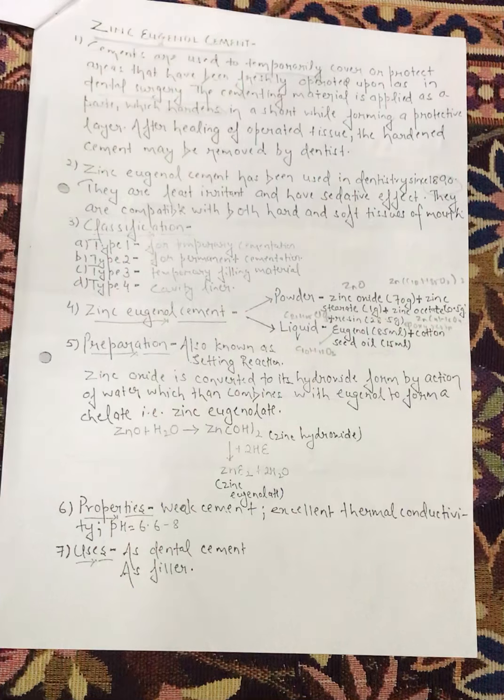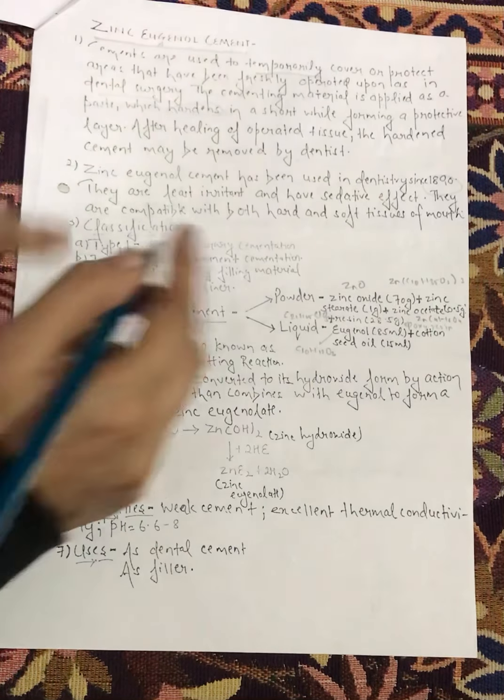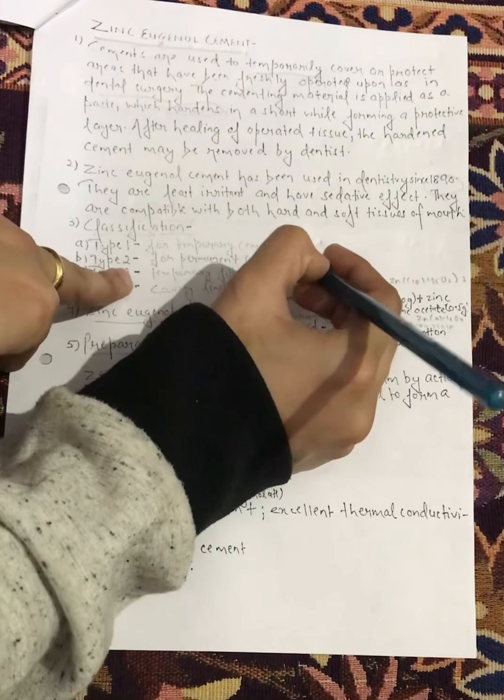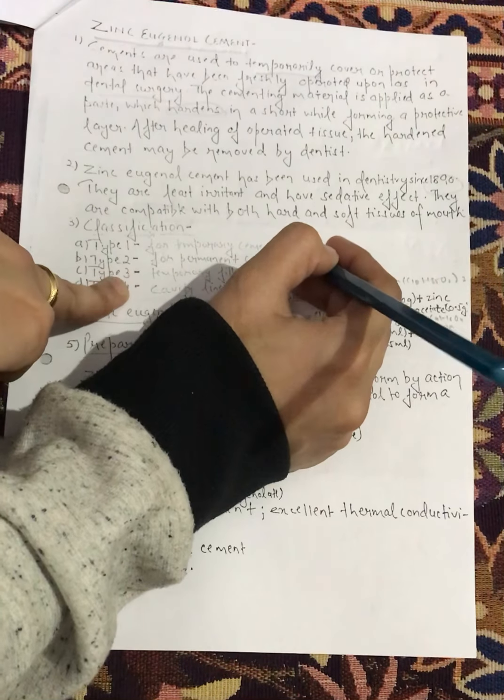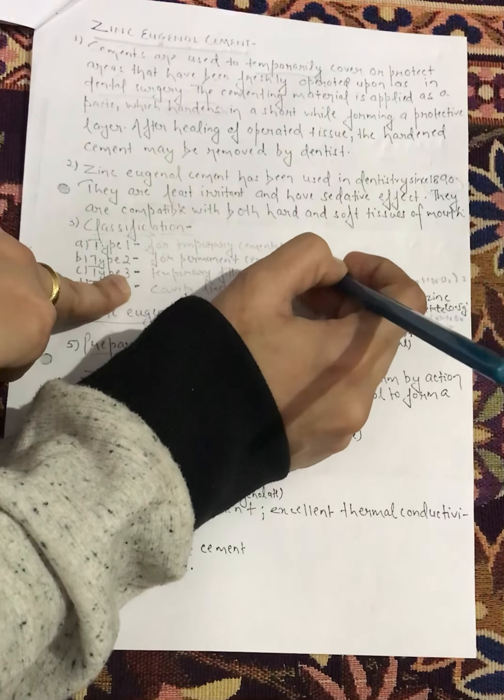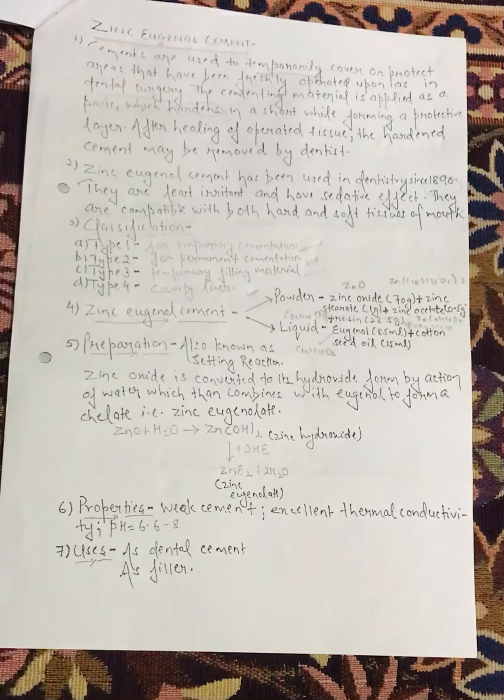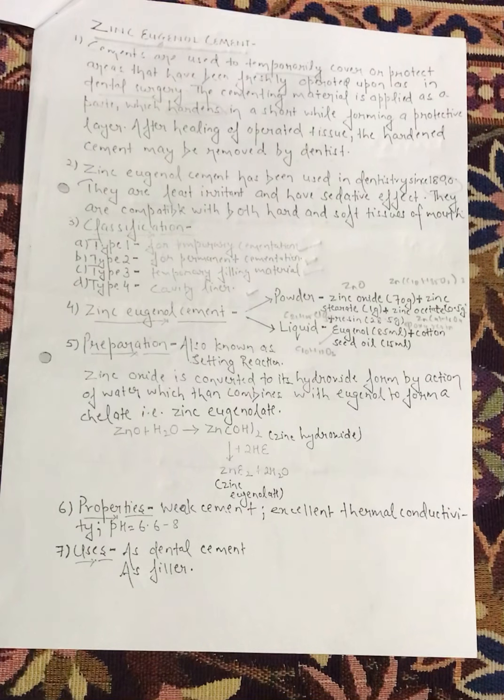Zinc eugenol cement, we have classified into four types. The first one is for temporary cementation. The second is for permanent cementation. Third, we have temporary filling material. And last one, they are the cavity liners. First, we have used them for some time. Next, we have fixed them in our teeth.